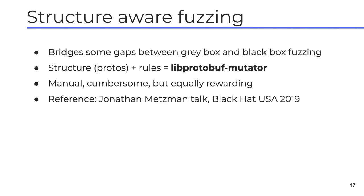We've done work to bridge gaps between gray box and black box fuzzing by making gray box mutations more specific to the format being fuzzed. One way is to write a custom mutator or define the input format using protobufs via a library called libprotobuf-mutator. Abhishek mentioned the example with SQLite: it has 100% branch test coverage and had been well fuzzed by plain gray box fuzzing for years. When we worked on a structure-aware fuzzer for SQLite, we shook out about a dozen new bugs, some of them security vulnerabilities. Jonathan Metzman gave a detailed talk on this at Black Hat USA this year.